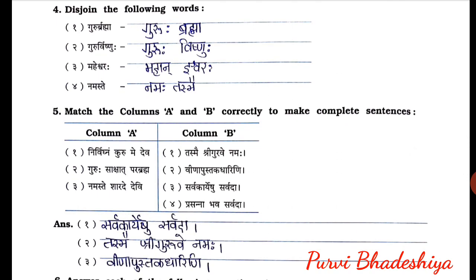Exercise number four: disjoin the following words. First one: Guru Brahma — Guru-ha plus Brahma. Second one: Guru Vishnu-ha — Guru-ha plus Vishnu-ha. Third one: Maheshwar-ha — Mahan plus Ishwar-ha. Fourth one: Namaste — Namaha plus Tasme.